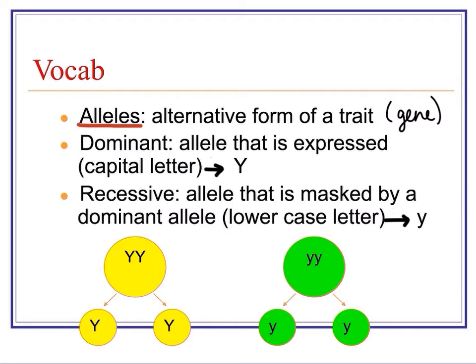Two other words that we will be using quite frequently are dominant and recessive. Dominant is an allele that's going to be expressed all the time, and we represent that with a capital letter. Recessive is the allele that can be masked by a dominant allele. So if they show up together, if you have one dominant allele and one recessive allele, the dominant allele is the one that you will actually see.